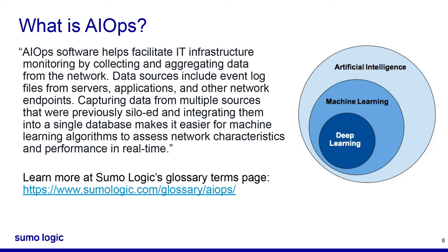If you want to learn more about AIOps, there's a link to the glossary term page to see how Sumo defines the terms. On this particular slide, you will also see telescoping relationships between AI, machine learning, and deep learning. AIOps can basically cover any of these particular levels of machine intelligence in order to help IT managers process and interpret that system data.